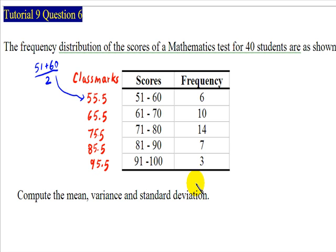The first class is from 51 to 60. The class mark is 55.5. This is the average of 51 and 60. Similarly, we can find the class mark for the second class is 65.5, for the third class is 75.5, for the fourth class is 85.5, and for the fifth class is 95.5.